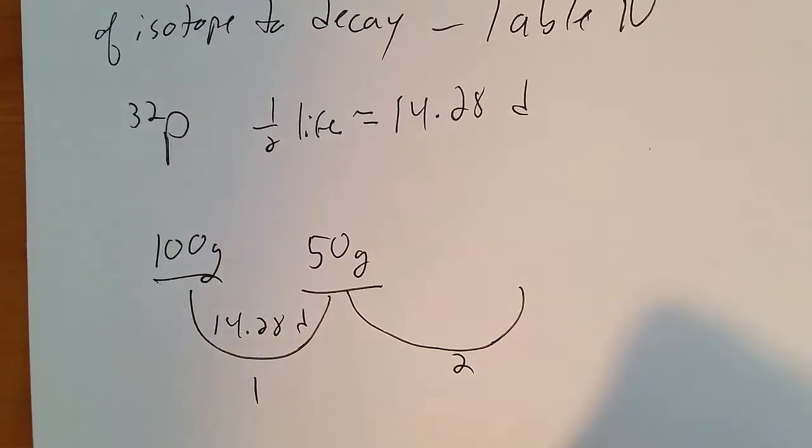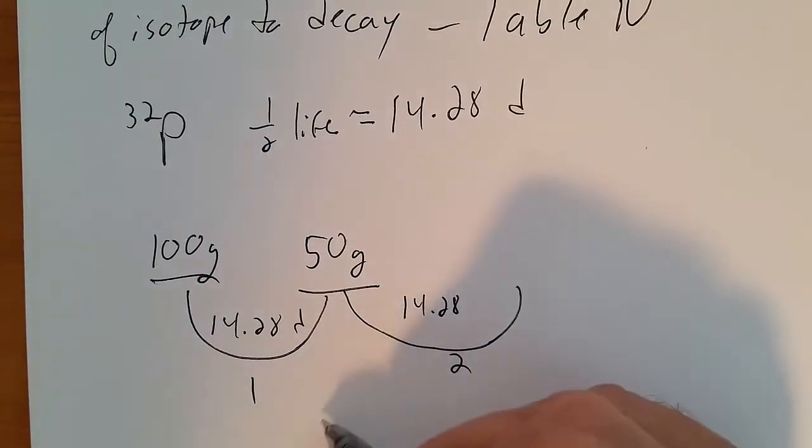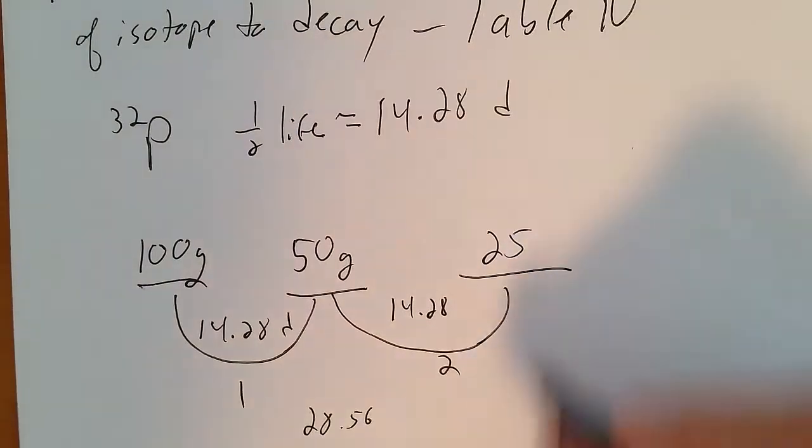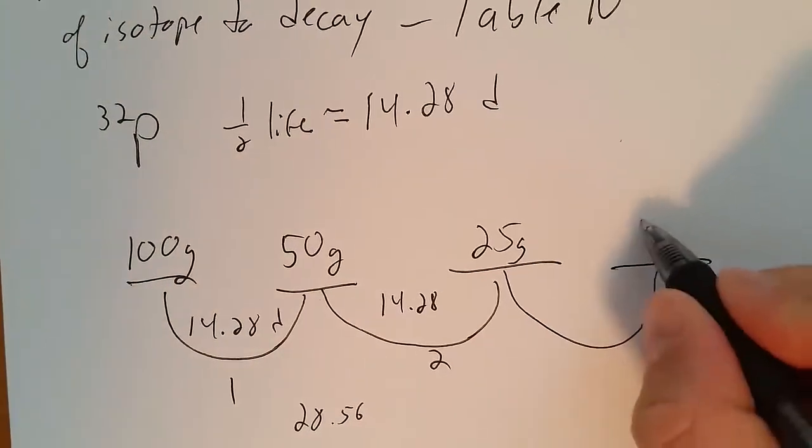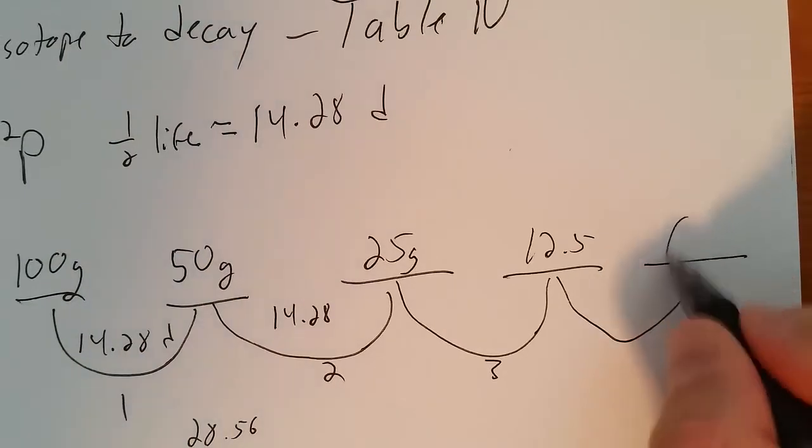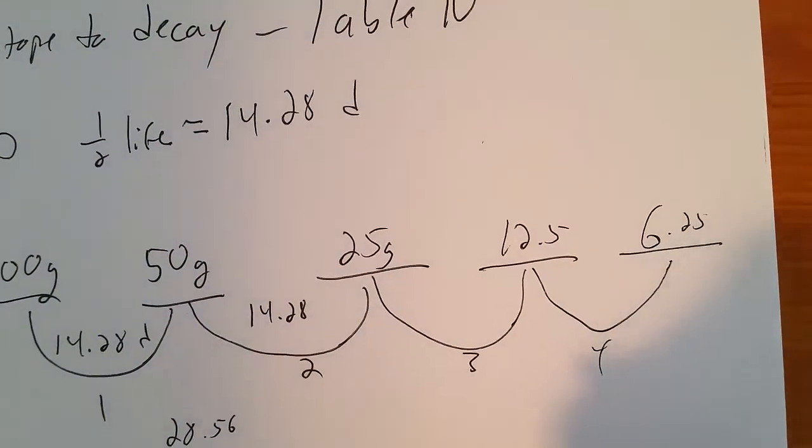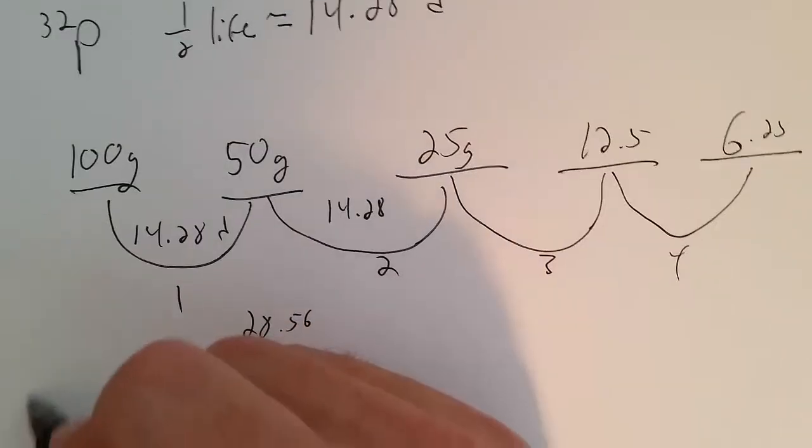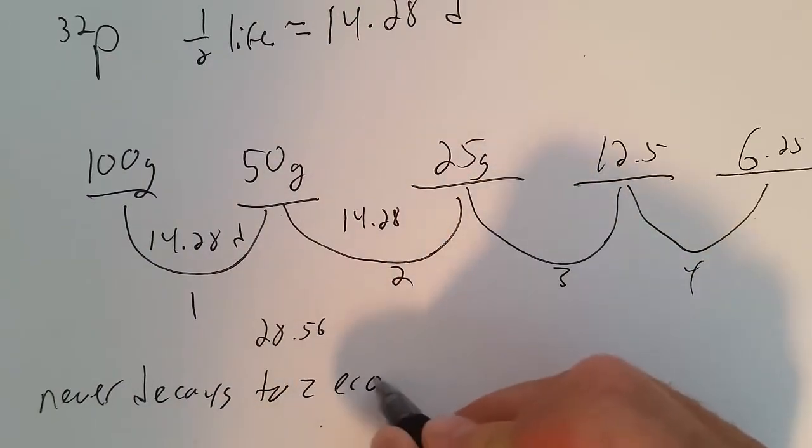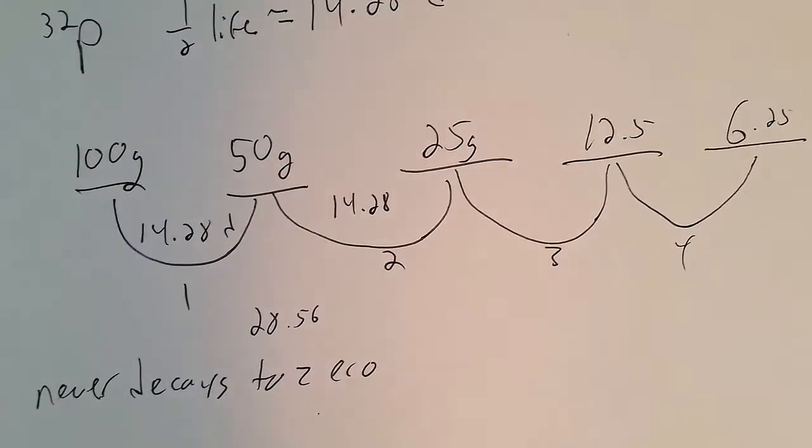Another half-life later, which is another 14.28 days, or a total of 28.56 days, there will be 25 grams left. Another half-life later, 12 and a half. Another half-life later, 6.25, et cetera. Always cutting it in half. It will never decay to 0, because by dividing it in half and half and half, that'll never ever get you to 0.